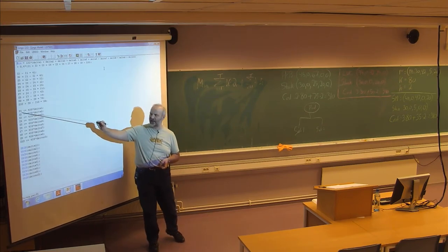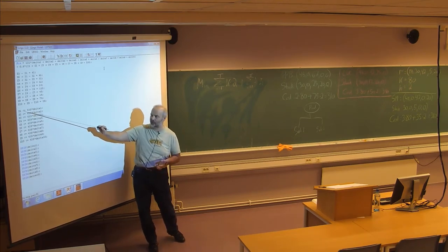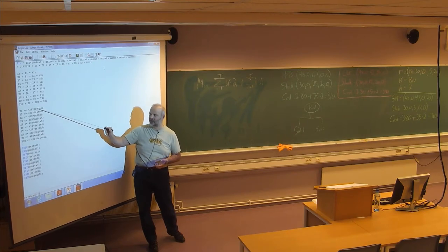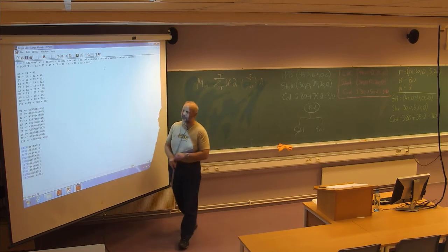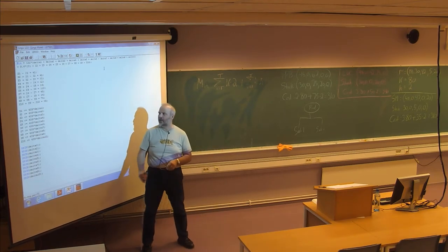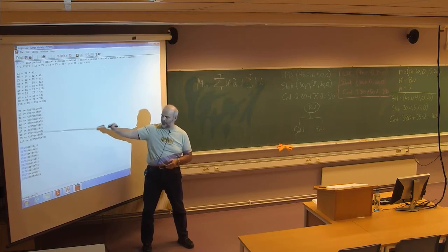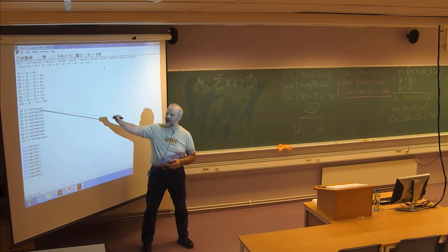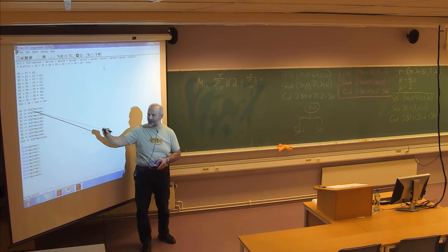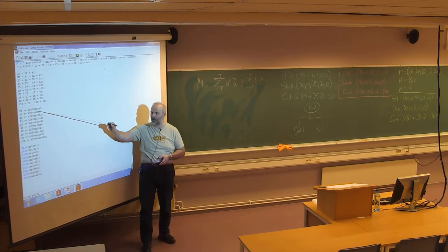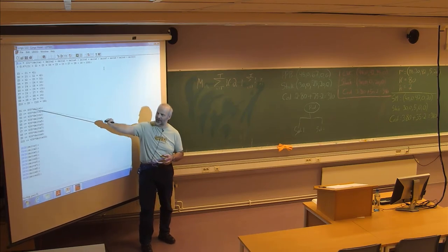The deltas are binary variables — either 0 or 1. When delta is 0, then the particular x variable should be smaller than or equal to something multiplied by 0, and since we have non-negativity, the x for that period should be exactly 0. If delta is 1, there is production in that period, and the maximum level is 439 multiplied by 1, so you should never produce more than this constant.